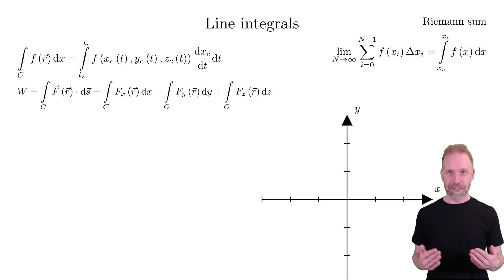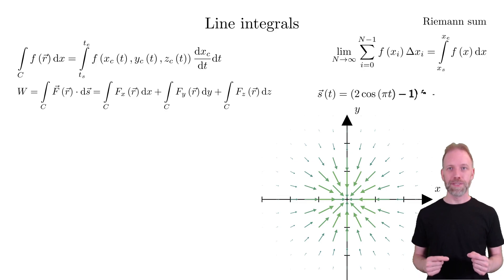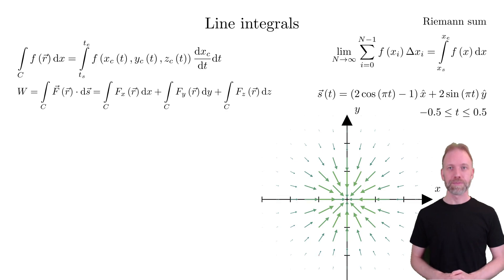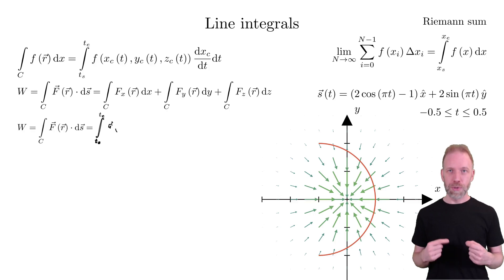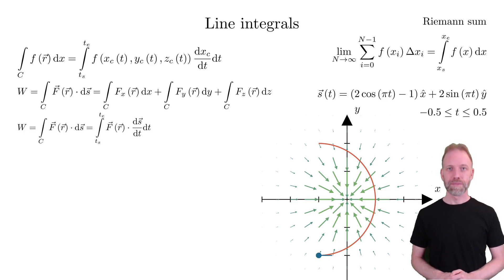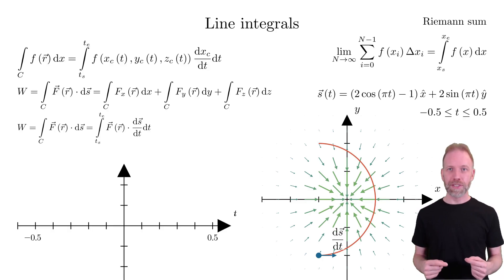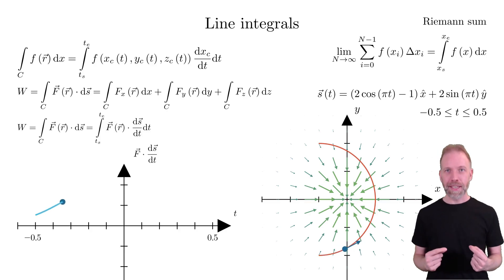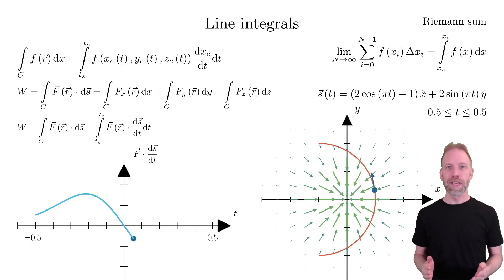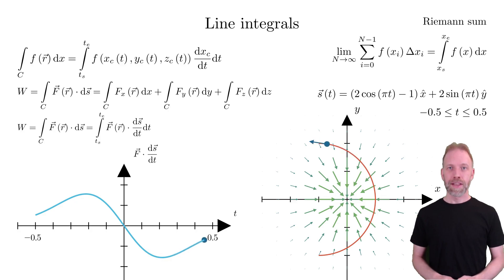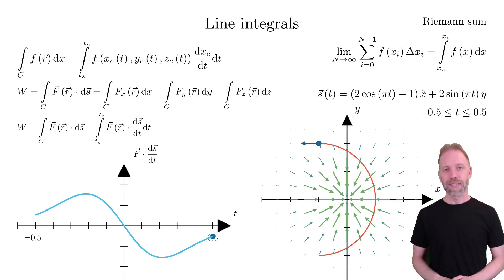Let us show a visual example. Assume that we have a force field and the following parameterization for the curve. We are going to calculate the mechanical work when we move along this curve. Let us create a graph of the dot product f·ds as a function of t and animate the motion. In the beginning, we are moving somewhat in the same direction as the field, hence a positive value. After the midpoint, we are moving somewhat opposite to the field, hence a negative value. The final value is the integral of the curve, which is a normal one dimensional integral. For this particular case, we can see that it is anti-symmetric and the result of the integral will be zero.